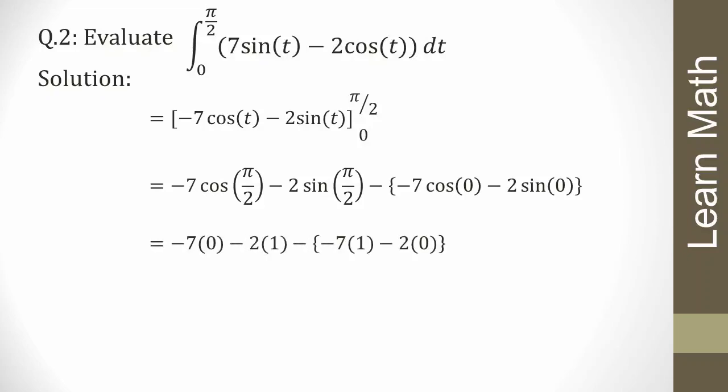After simplifying, putting in the limits: at t = π/2, cos(π/2) = 0 and sin(π/2) = 1; at t = 0, cos(0) = 1 and sin(0) = 0. So we get (−7·0 − 2·1) − (−7·1 − 2·0) = −2 − (−7) = −2 + 7 = 5.